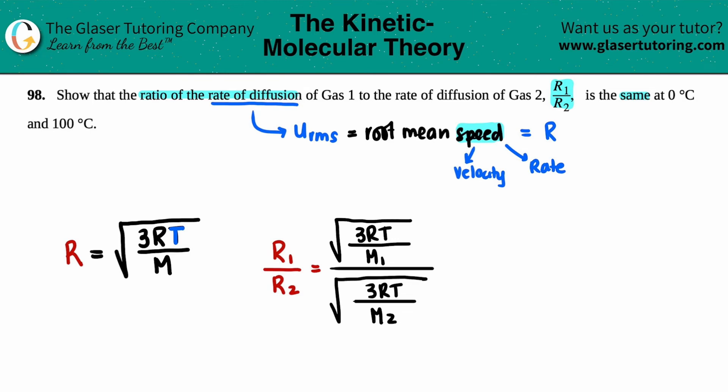Now let's get rid of some constants. Well, the three is the same in both cases that gets canceled out. The R's also cancel out because they're the same constant value. That's the gas constant. So now we're left with the square root of T divided by M1 divided by T divided by M2.